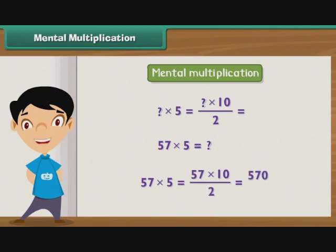Now divide 570 by 2 to get 285 as the result.